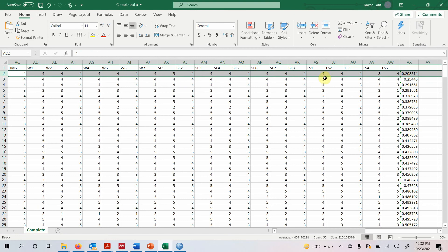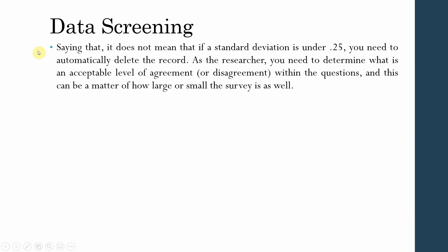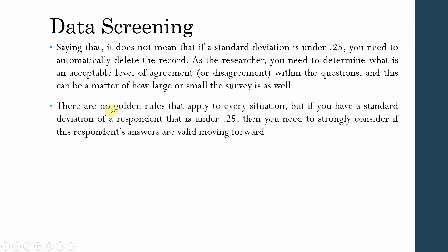That said, it does not mean you automatically delete a record if the standard deviation is under 0.25. As the researcher, you need to determine what is an acceptable level of agreement or disagreement within the questions. This can depend on how large or small the survey is — the threshold may change accordingly. There is no golden rule for every situation, but if a respondent's standard deviation is less than 0.25, you should strongly consider whether their answers are valid.